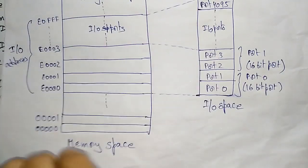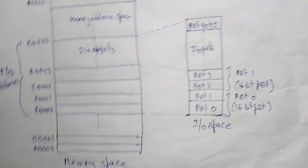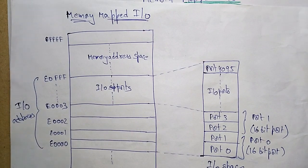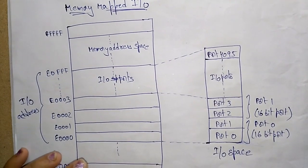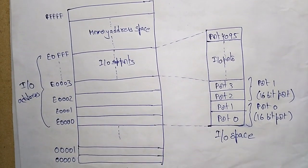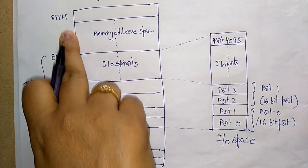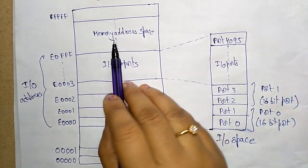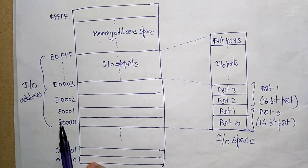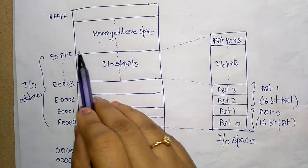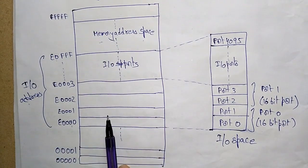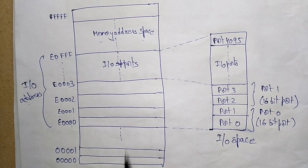Here is an example of memory mapped I/O. The memory address space is allocated in the CPU from 0x0000 to 0xFFFF. A specific range from 0xE0000000 to 0xE0FFFFFF is allocated to I/O addresses — meaning I/O port information will be stored at these addresses — and the remaining addresses are for memory address space.